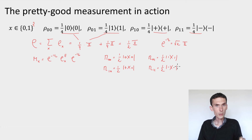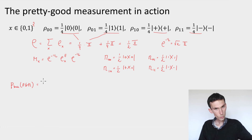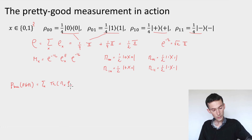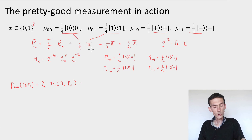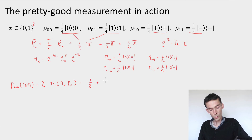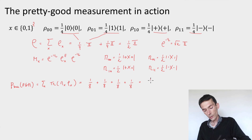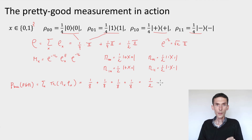Now let's compute the success probability. By definition, this is equal to the sum over all x of the trace of M_x times ρ_x. For instance, M_{00} times ρ_{00} gives one times the normalization factors, which is one eighth. Each of the four terms is equal to one eighth, so we get one half overall.